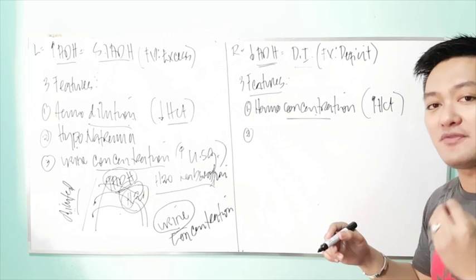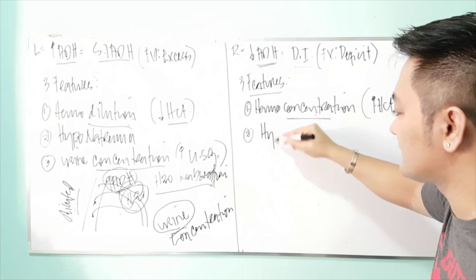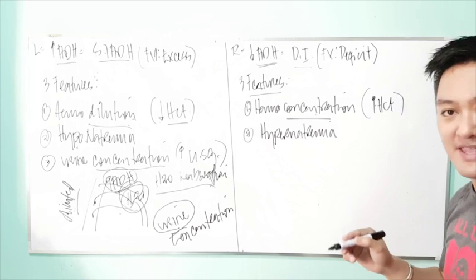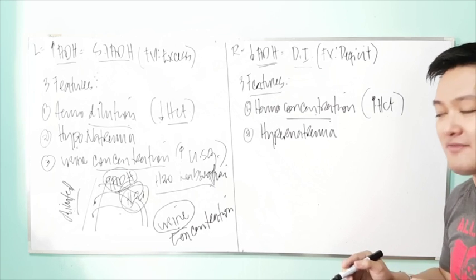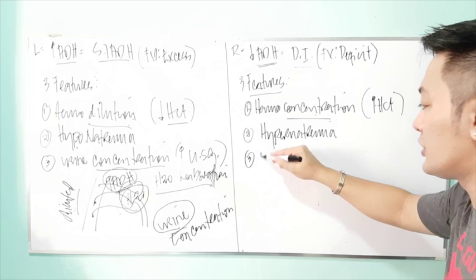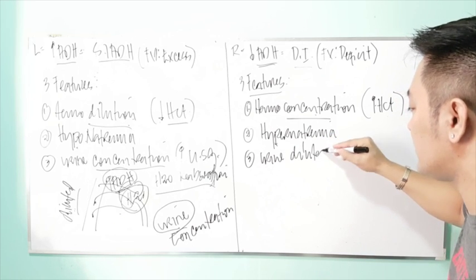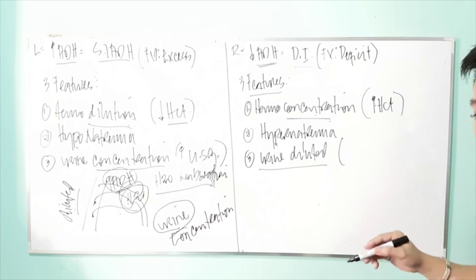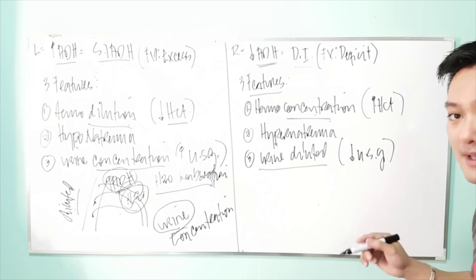The second feature of diabetes insipidus is hypernatremia, due to hemoconcentration — there will be an increased blood sodium level. The third feature is urine dilution, supported by a decreased urine specific gravity. Since less water is reabsorbed, there is a lot of water remaining in the urine, making it diluted.